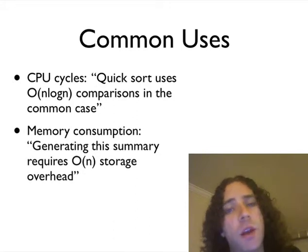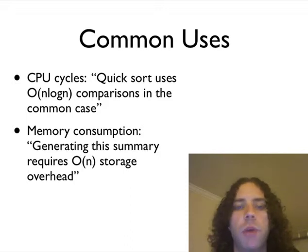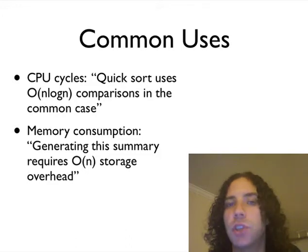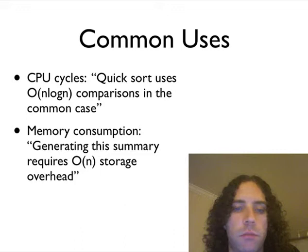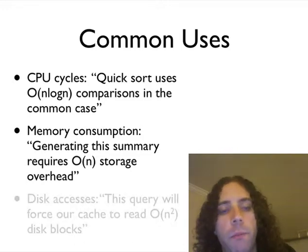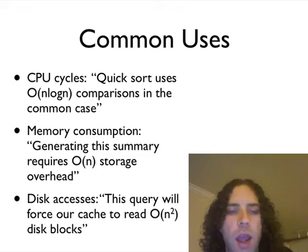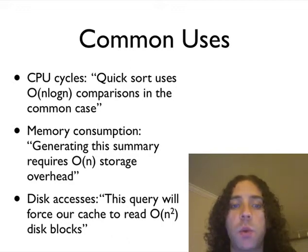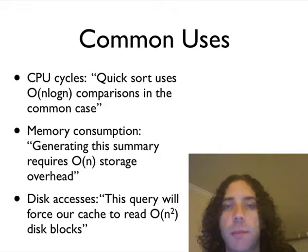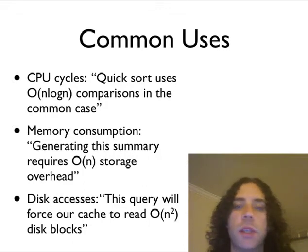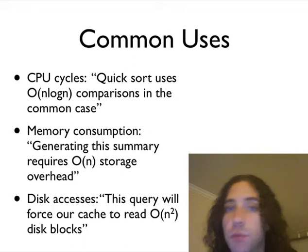You can come up with other environments too, where you can talk about other kinds of costs. Memory consumption. You might say generating this summary with some analytics engine requires big O of n storage overhead. Okay, for some computation it's doing, it actually needs something which is roughly equivalent to the size of the input, or at least scales as the size of the input increases linearly. And then you can also have disk access. You can say things like, well, this query will force our cache to read the big O of n² disk blocks, in which case we're either going to have to do something to make sure that the cache stays of a certain size relative to the input, or that we can shave off a factor there, or we need to change something about the query optimizer, such that it actually uses the memory it has in a better way.